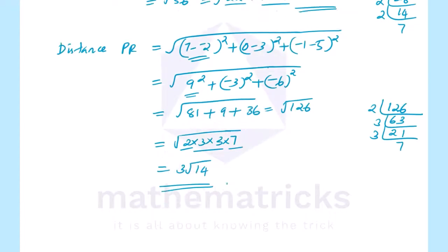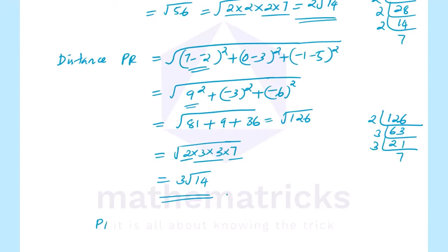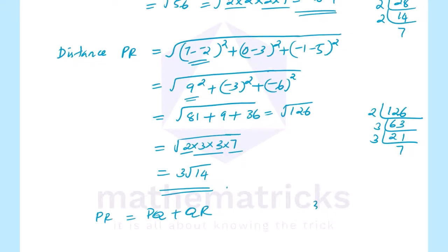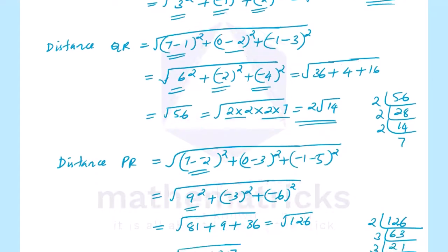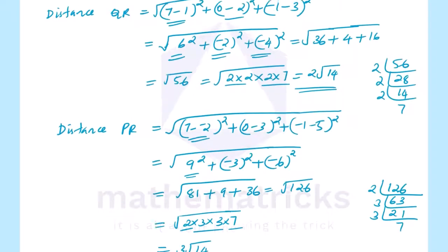We have to prove PR equals PQ plus QR. PR is 3 root 14, PQ is root 14, and QR is 2 root 14. So root 14 plus 2 root 14 equals 3 root 14. Therefore the three points are collinear points.